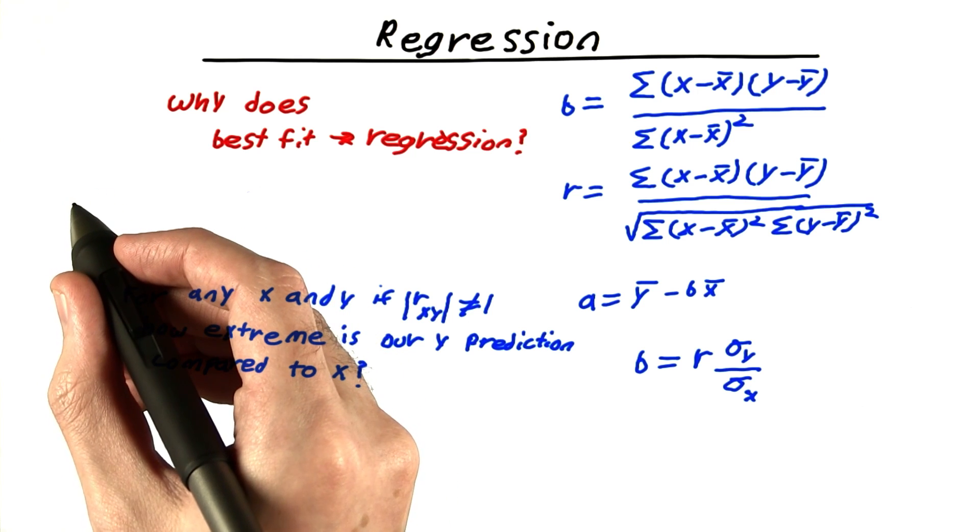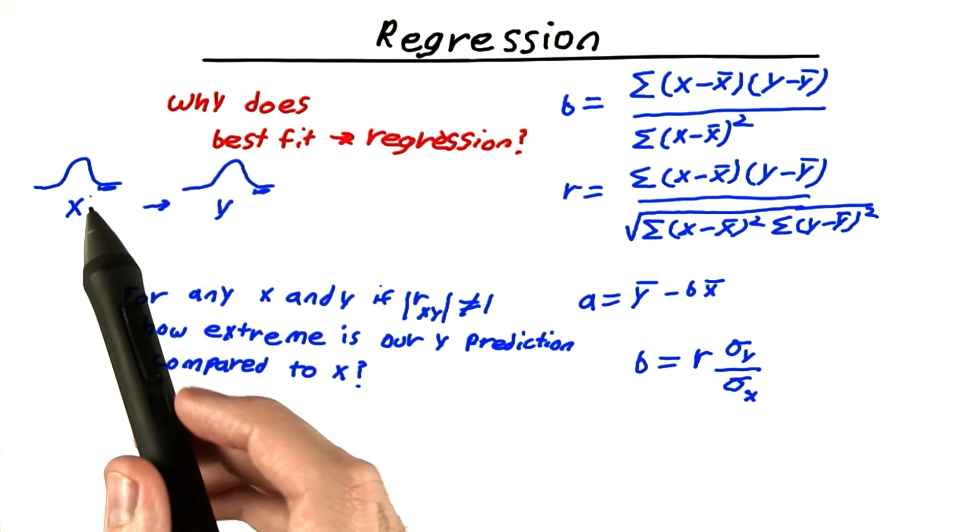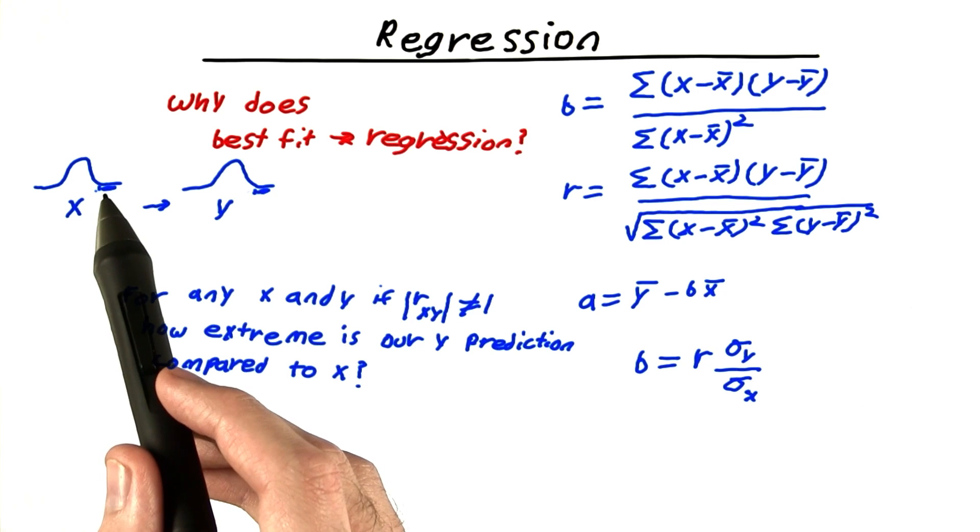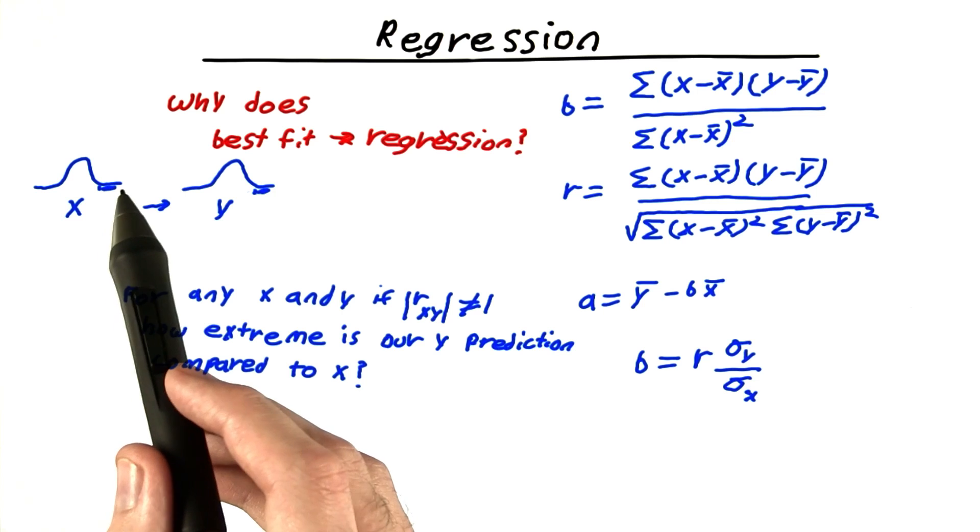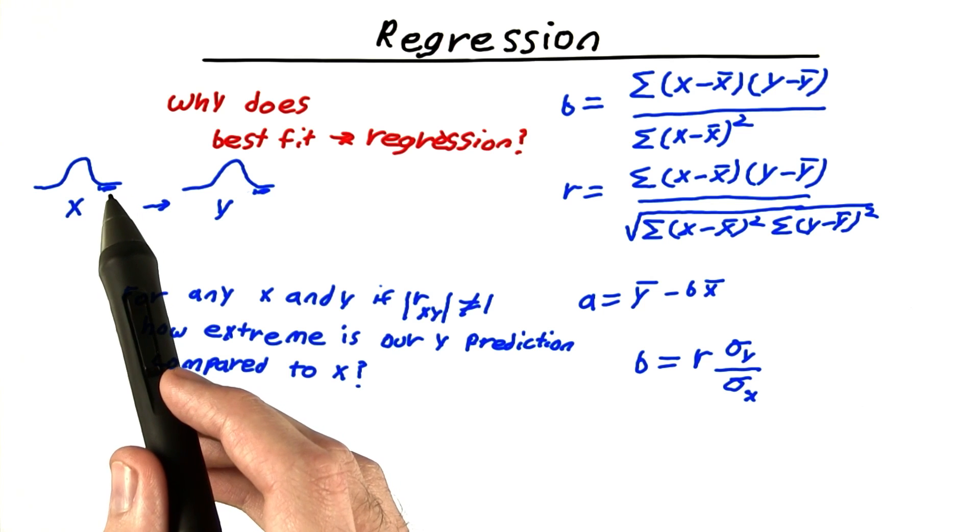If we have x, so we have some observation in the x's, say, right here. And we have a total probability that's denoted by this little shaded region